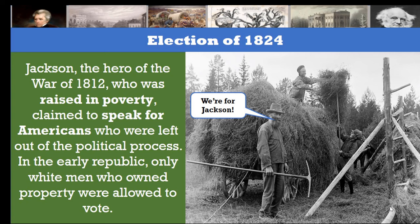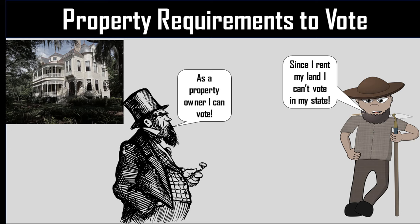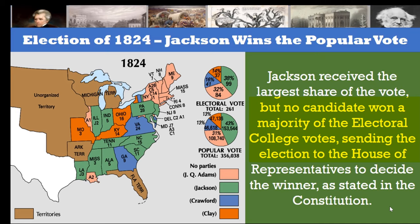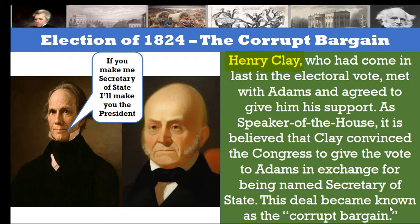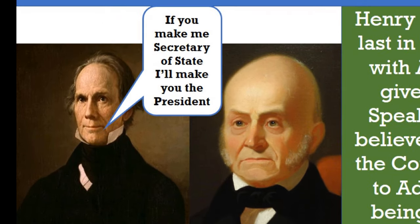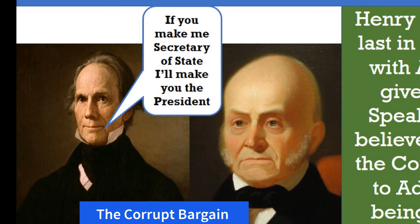Jackson, who had been raised in poverty, claimed to speak for Americans who had been left out of the political process. In the early republic, often only white men who owned property were allowed to vote in most states. Jackson received the largest share of the vote, but no candidate won a majority of the Electoral College votes, sending the election to the House of Representatives to decide the winner, as stated in the Constitution. Henry Clay, who had come in last in the electoral vote, met with Adams and agreed to give him his support. As Speaker of the House of Representatives, it is believed that Clay convinced the Congress to give the vote to Adams in exchange for being named Secretary of State. This deal became known as the Corrupt Bargain.